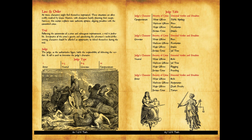The concept is that once a character or the characters are arrested for something, a trial should follow. At times characters might find themselves imprisoned — these situations are often swiftly resolved by game masters with characters hastily planning their escape. However, this section explores more authentic options, aligning penalties with the committed crime. The first step is a trial. Following the commission of a crime and subsequent imprisonment, a trial is probable. Irrespective of the crime's gravity, in a medieval-like setting, characters should be afforded an opportunity to defend themselves during the trial.